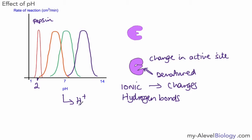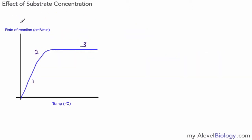Changing the pH alters the concentration of hydrogen ions — more acidic means more hydrogen ions; higher pH means more hydroxide ions. Both of these ions carry a charge, and because the enzyme relies on ionic bonds to maintain the active site's shape, changing the charges in solution affects those bonds. The enzyme can no longer keep the active site in the correct shape, so it becomes denatured. Enzymes can tolerate a small change in pH, but not too much.